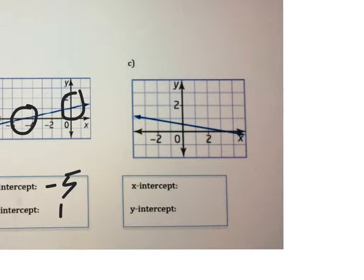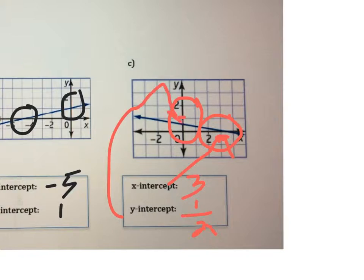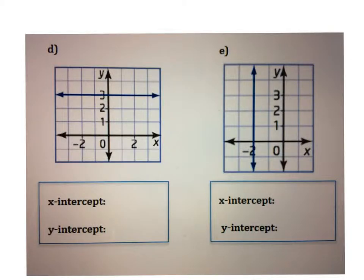Let's look at Graph C. The line is hitting the x-axis at 3. The y-intercept is where the line is crossing the y-axis — it looks like it's hitting at one half. So the x-intercept is where the line hits the x-axis, and the y-intercept is where the line crosses the y-axis.